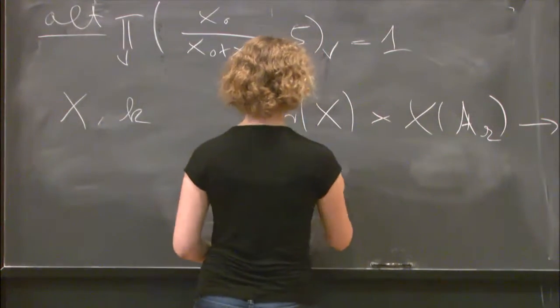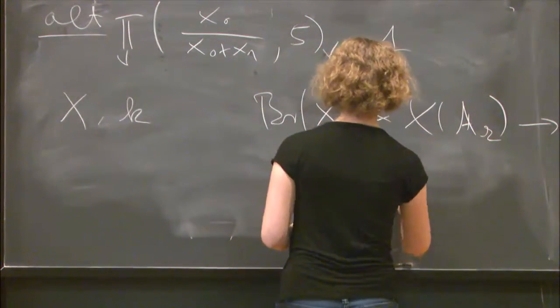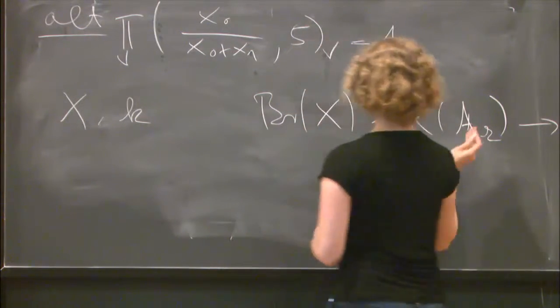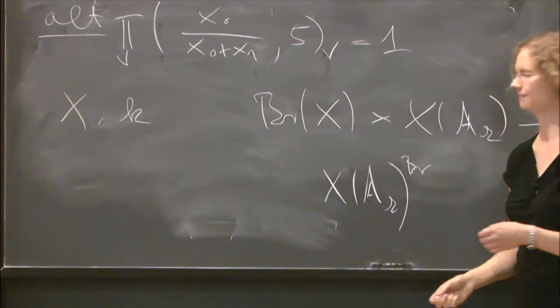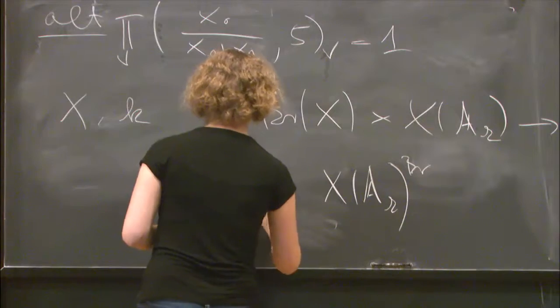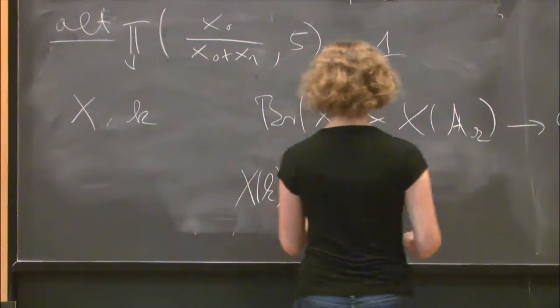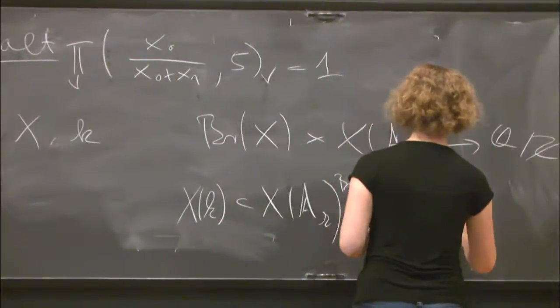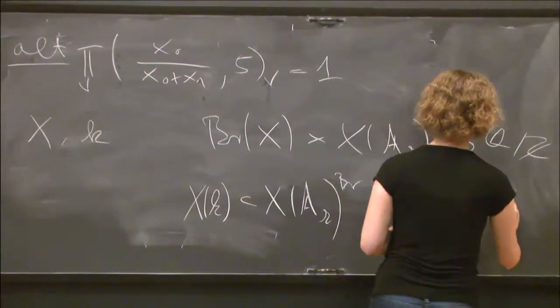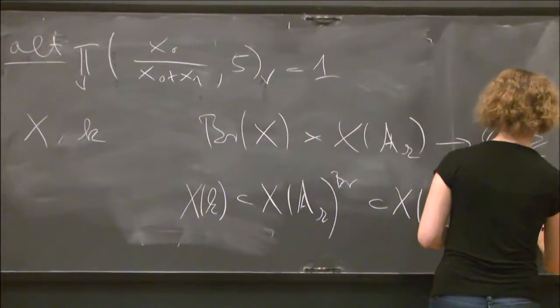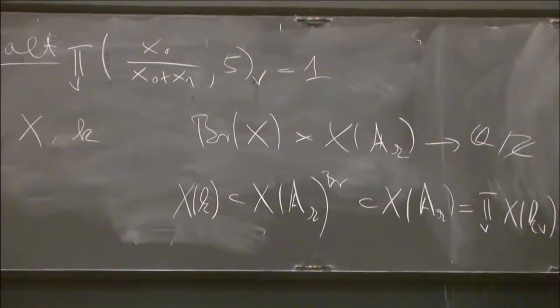So it's convenient to define what is called Brauer-Manin set. It's a set of all idelic points which have the property that they are orthogonal to the whole Brauer group. We've just seen that the rational points, they're contained in the Brauer set, and of course, this is contained in the idelic points which, in the case of projective variety, is nothing else than a product of all these places.